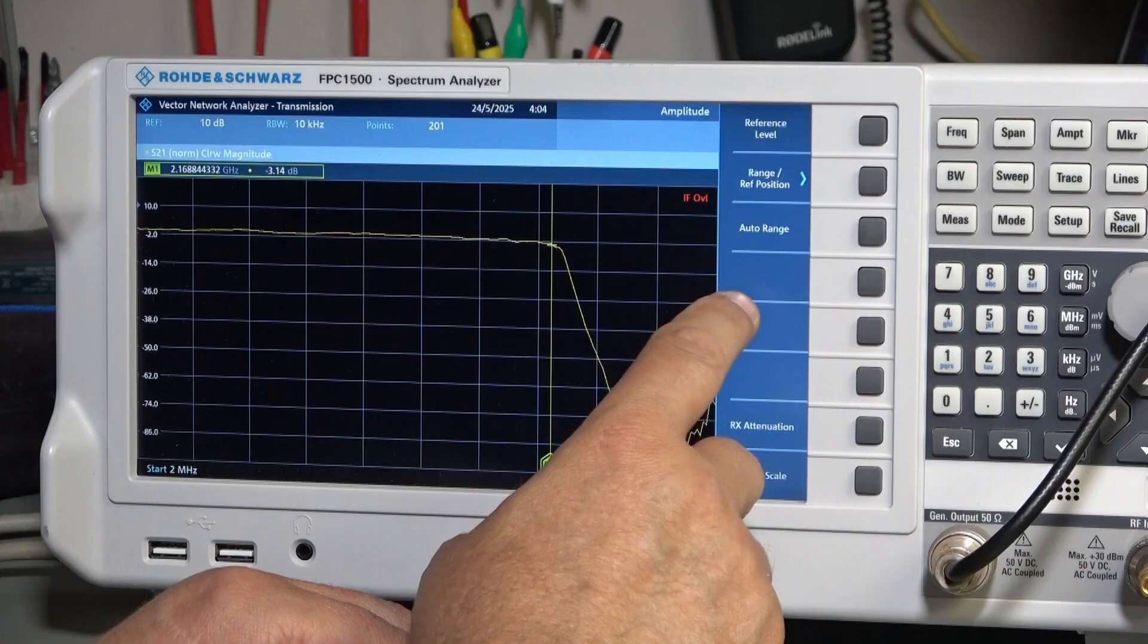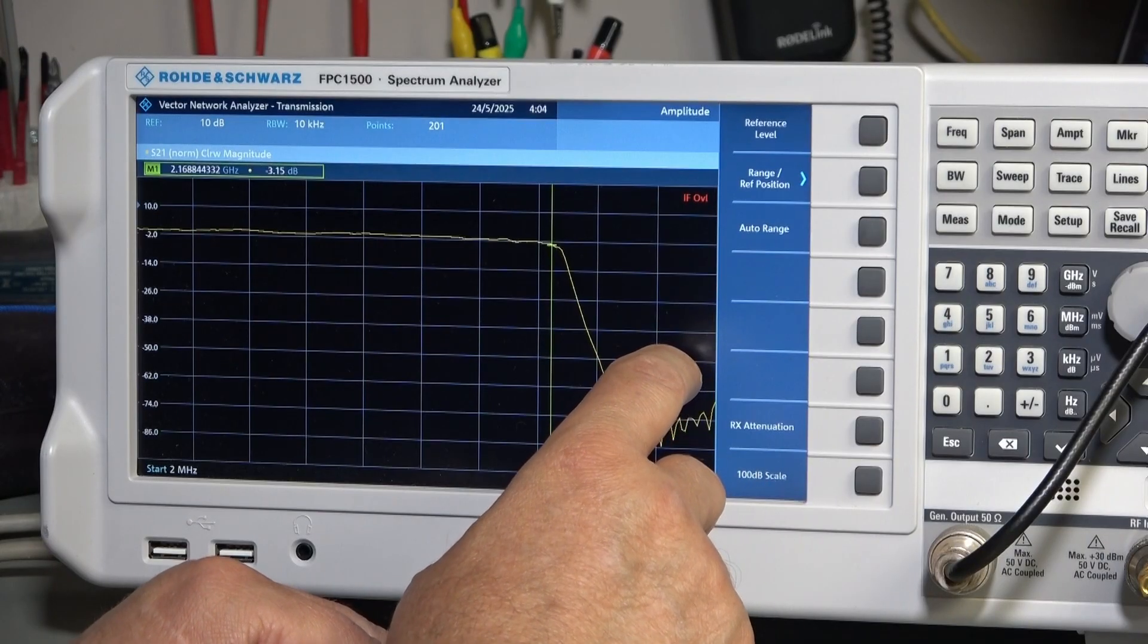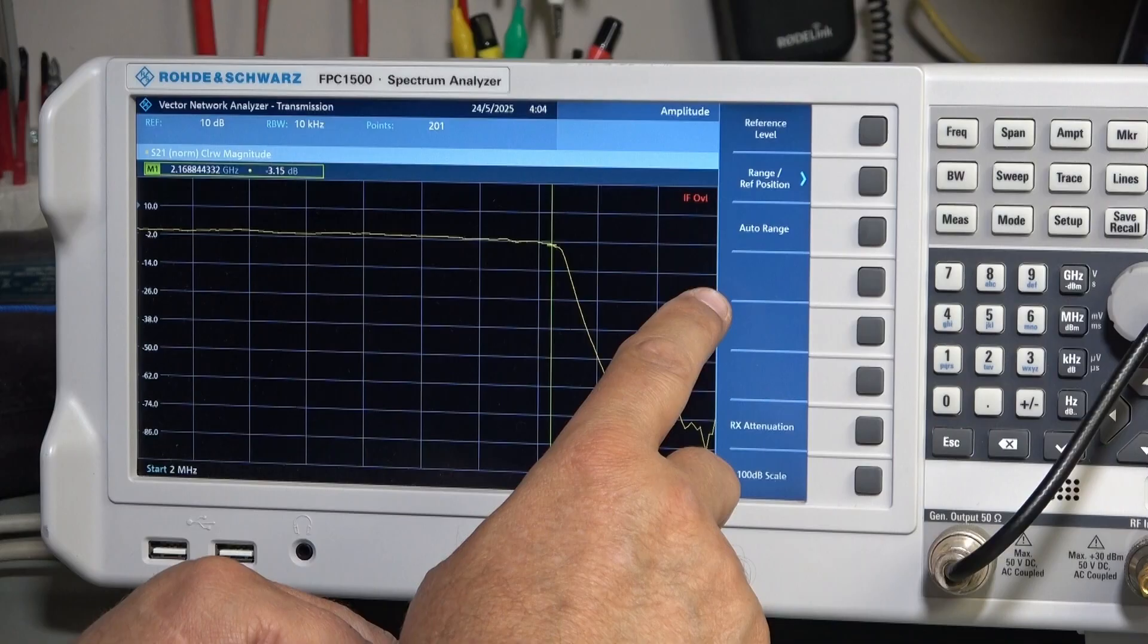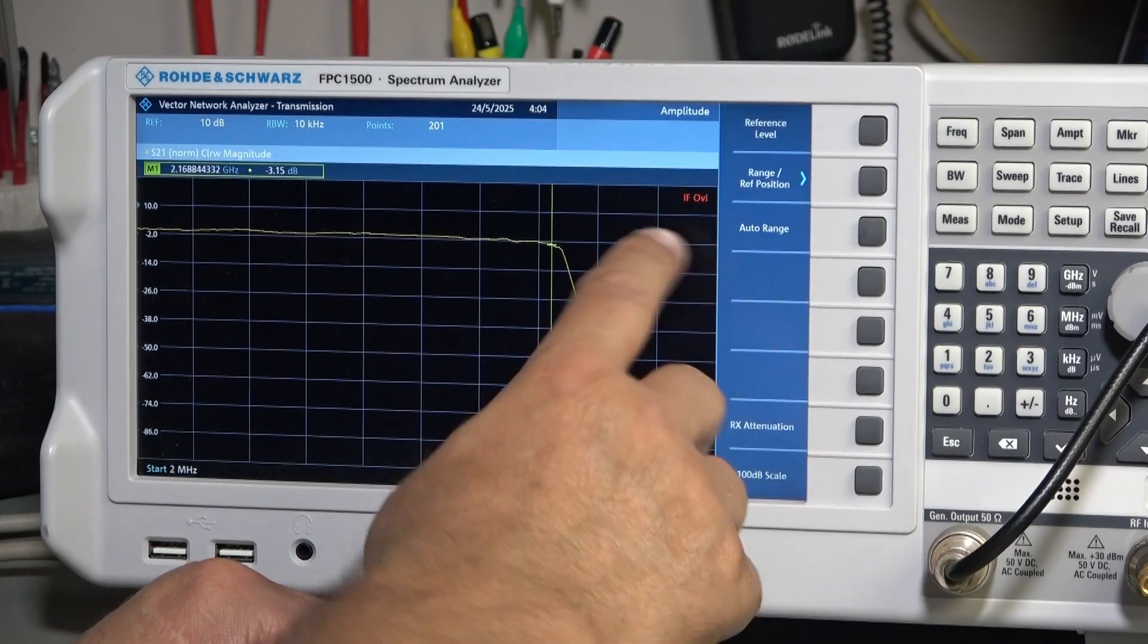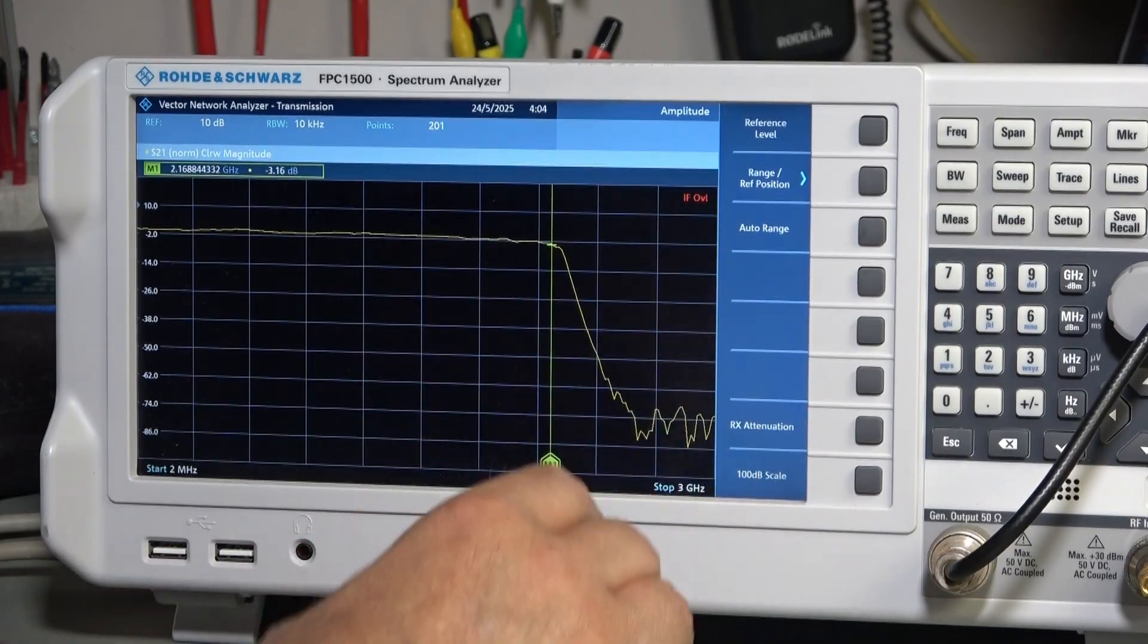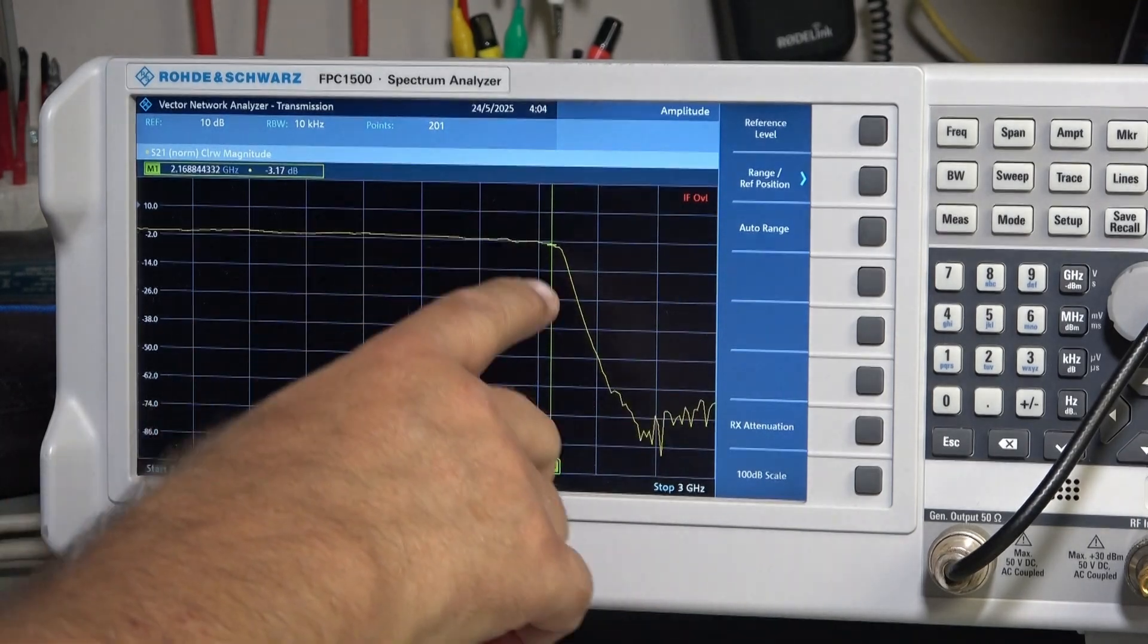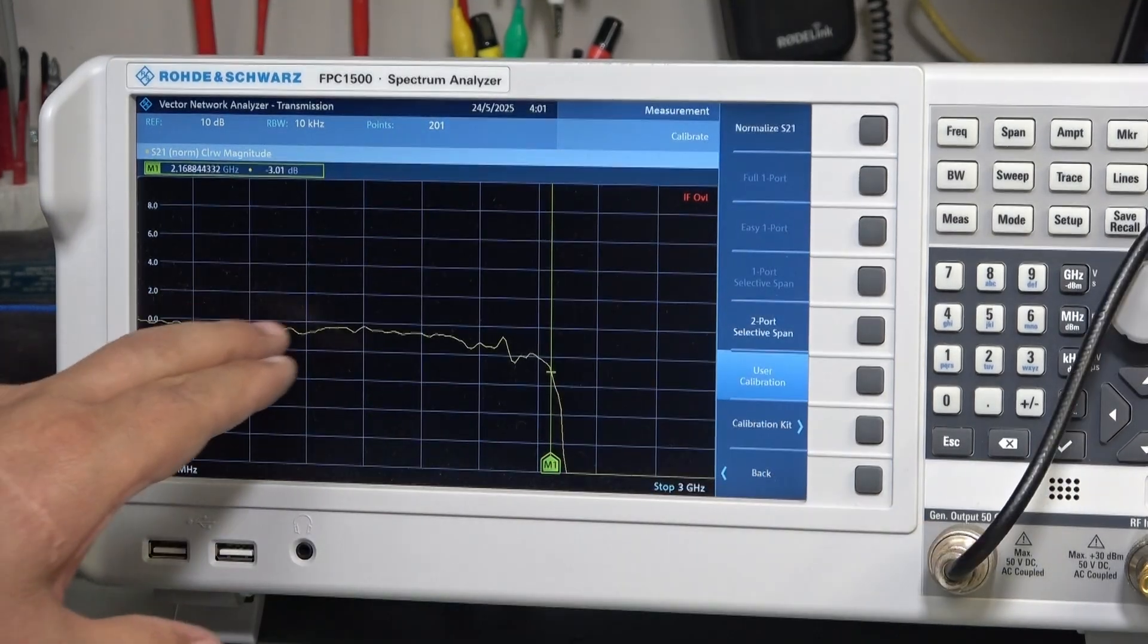There could be a bit of ripple in there of course, but overall I'm pretty pleased. This is clearly a 2.1 to 2.2 gigahertz low pass filter. And there we are, zoomed right into 2 dB per division. I can see the flatness is better than about 0.3 dB for most of the flat section.